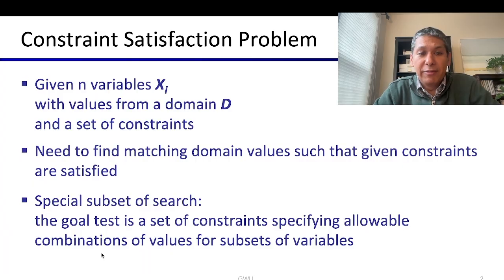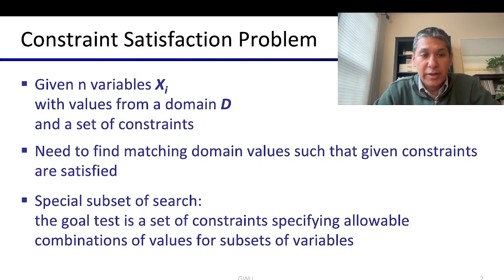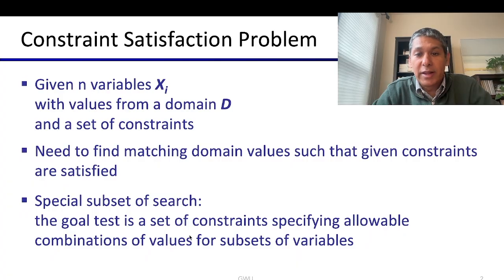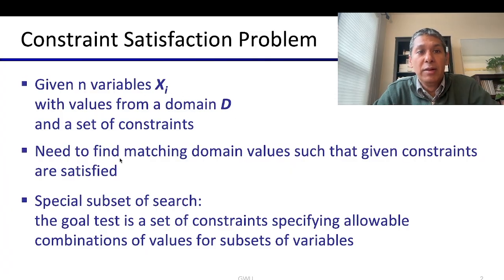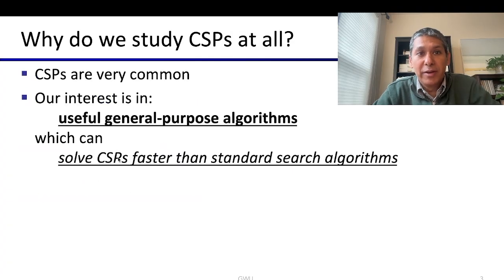What we need to do is find matching domain values such that the given constraints are satisfied. CSP is a special subset of search, which we have already covered — uninformed search, informed search, DFS, BFS, ID-DFS, etc. When formulated as a search problem, the goal test is a set of constraints specifying allowable combinations of values for those variables.